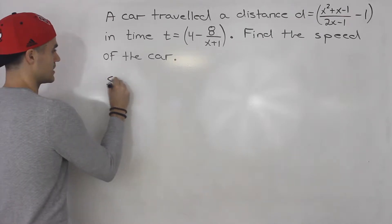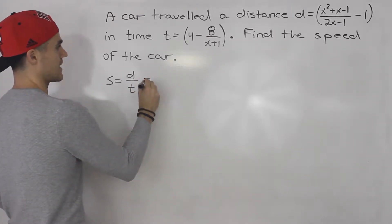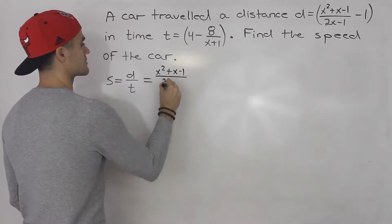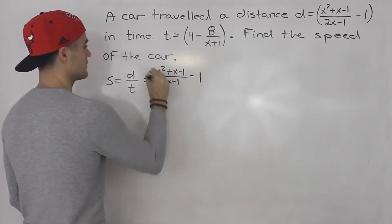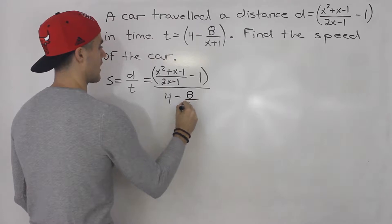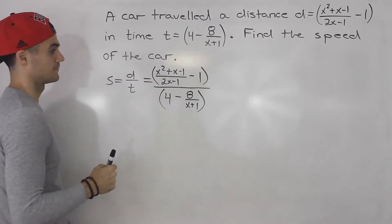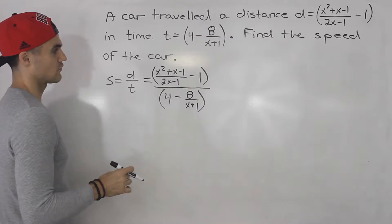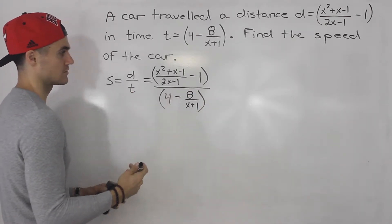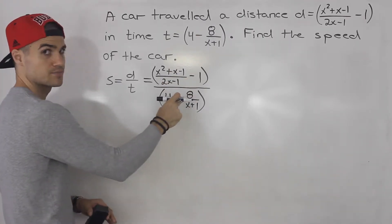We know that speed is equal to the distance something travels over the time. So in this case, the distance is x squared plus x minus 1 all over 2x minus 1, minus 1, and we divide that whole expression by 4 minus 8 over x plus 1. When you get a question like this, you want to make sure the numerator is one fraction and the denominator is one fraction, because then you can divide them smoothly by flipping and multiplying.